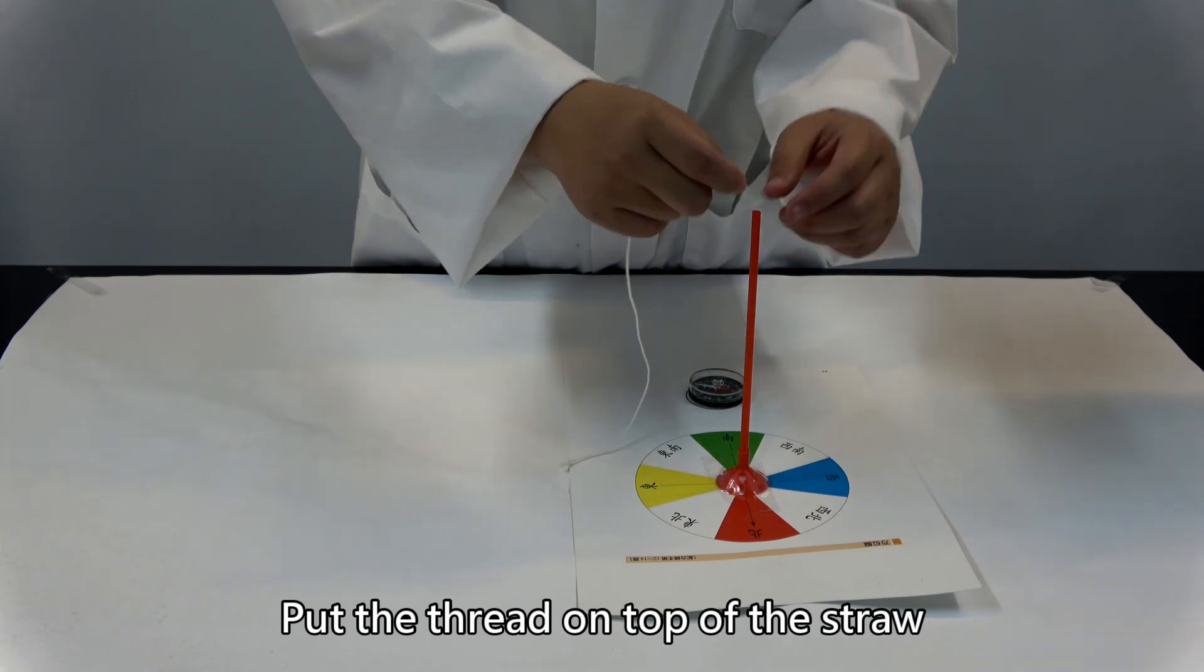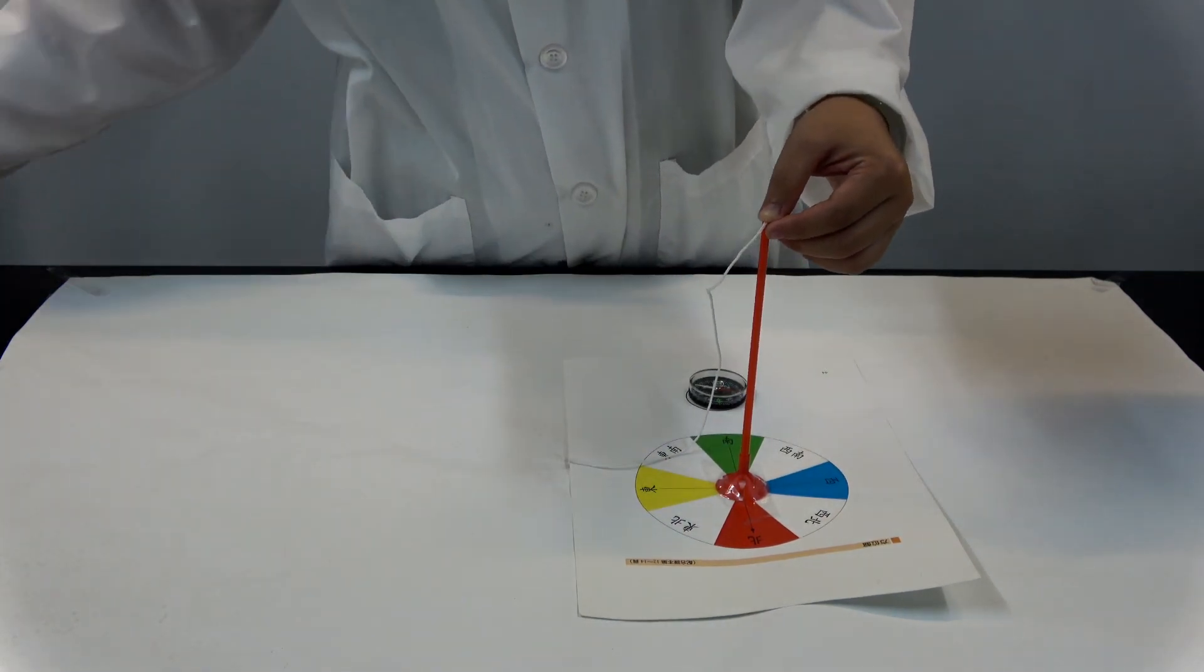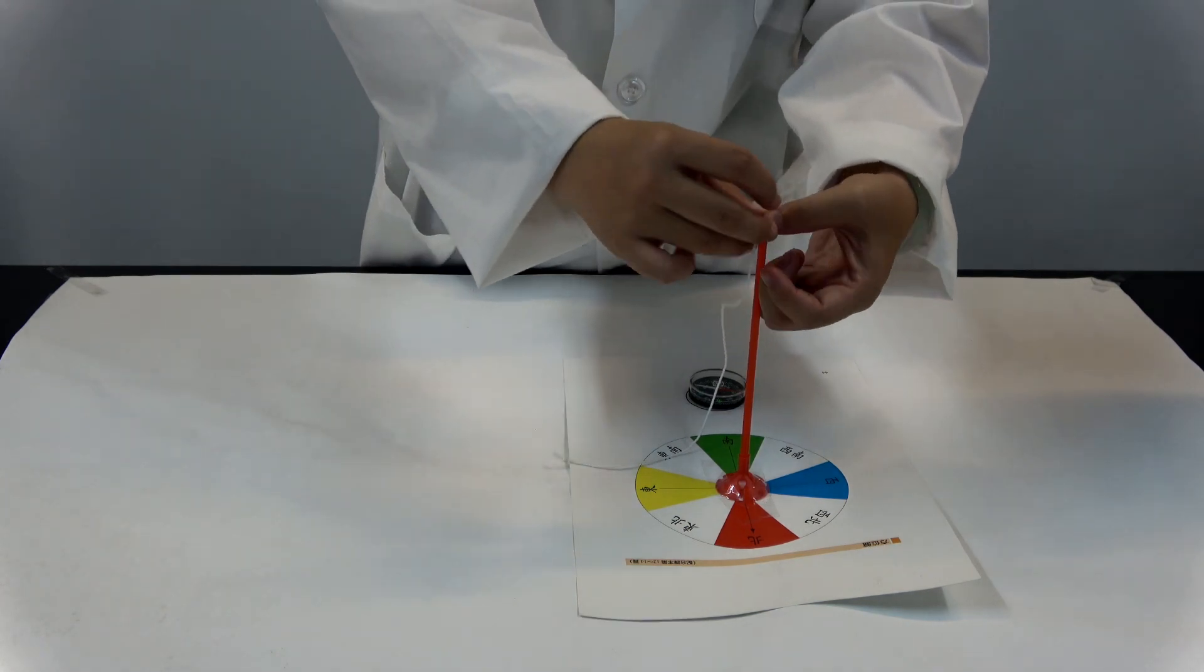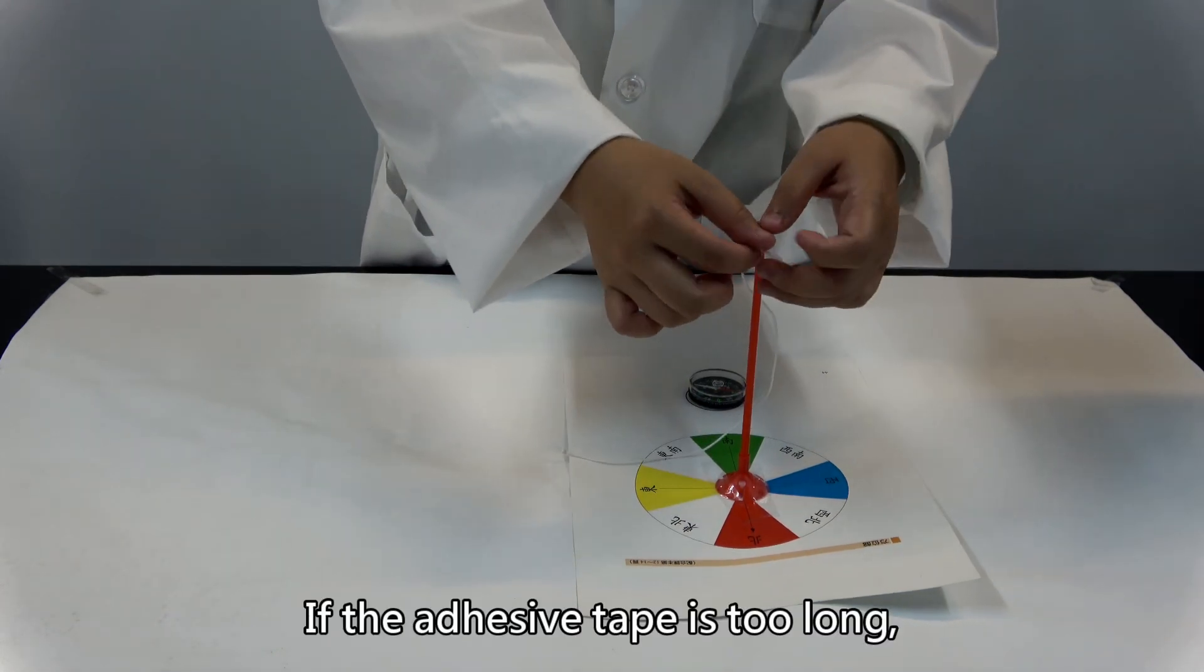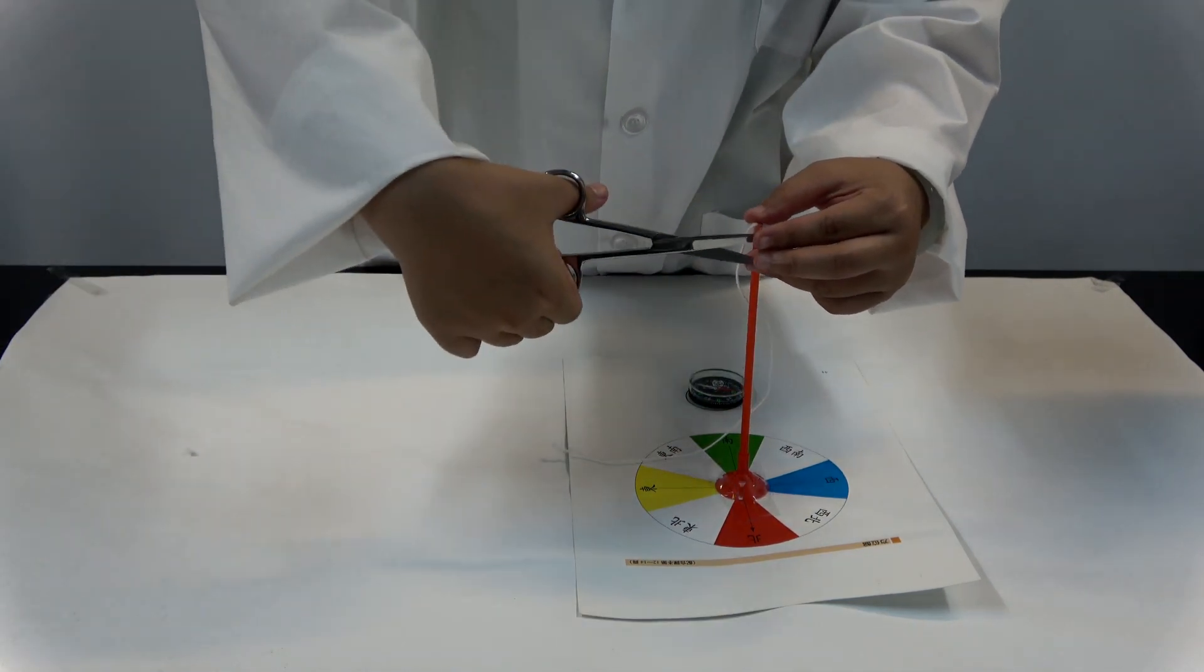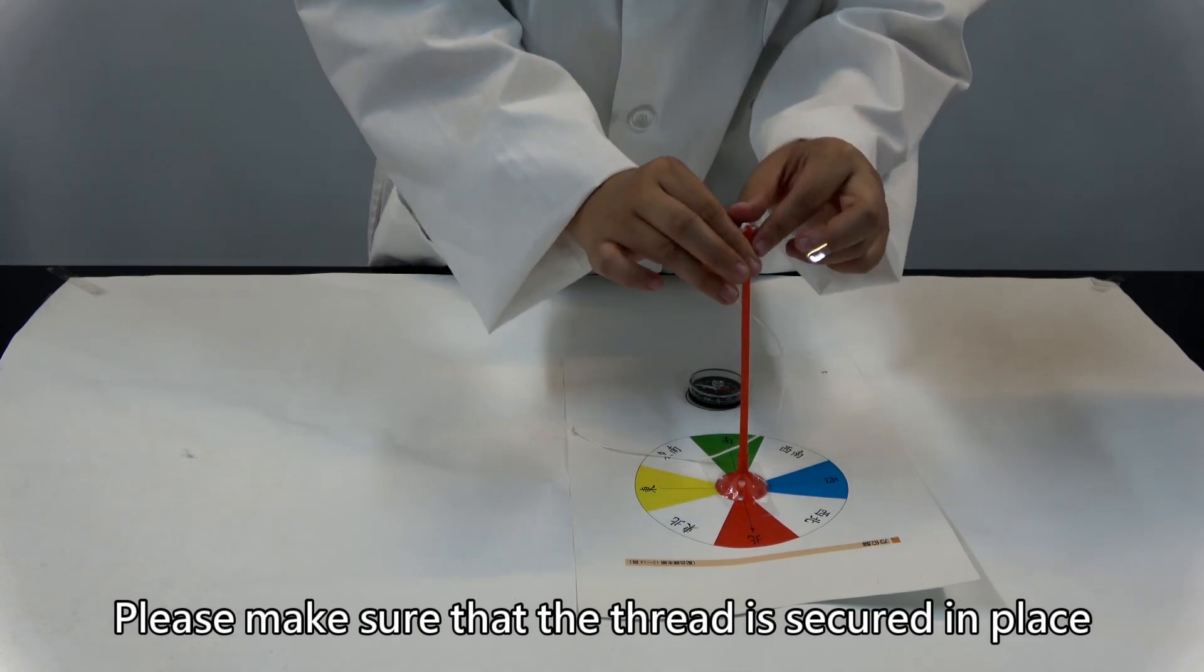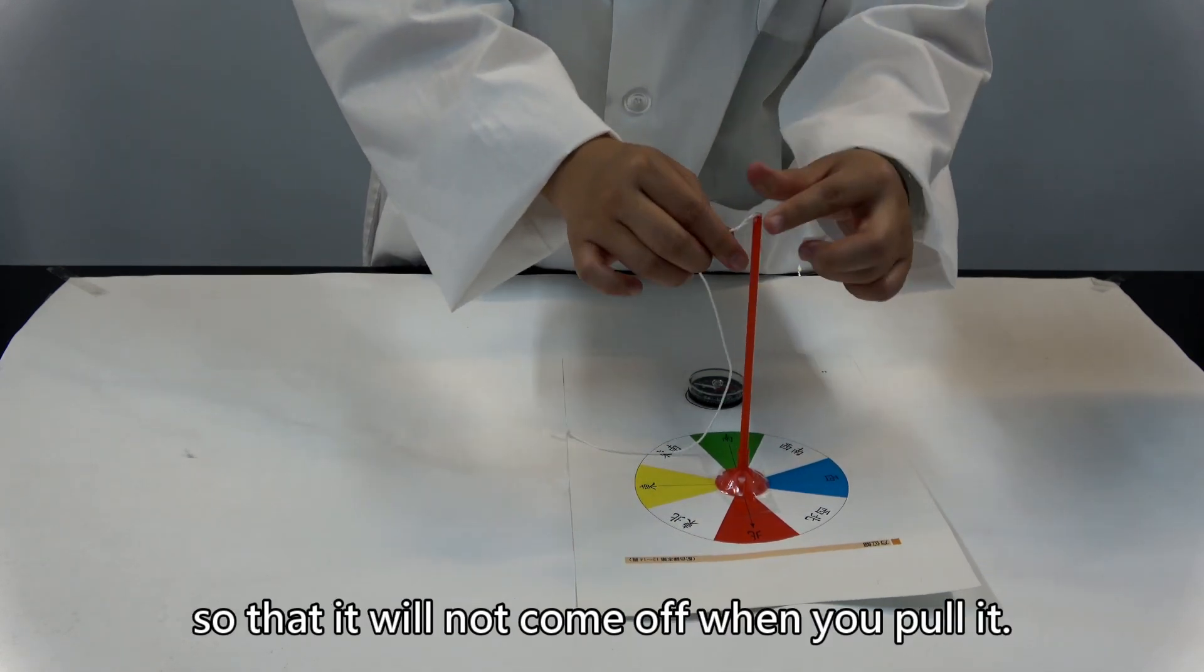Put the thread on top of the straw and tape it. If the adhesive tape is too long, cut the excess part. Please make sure that the thread is secured in place so that it will not come off when you pull it.